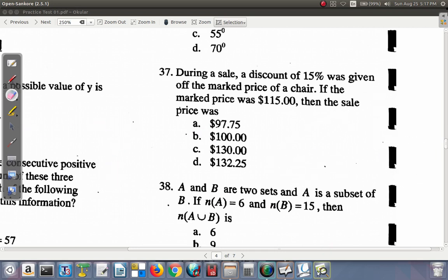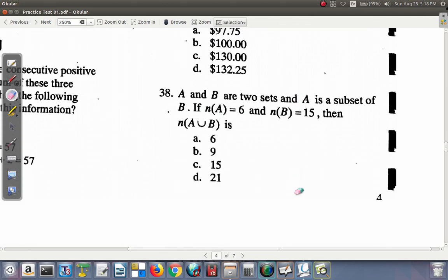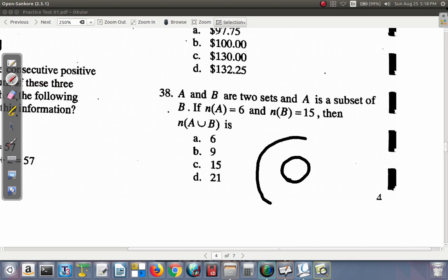Let's look at question 38. Remember, if you're still not too clear on any of these solutions, you should state it in our message board and they will respond. A and B are two sets, and A is a subset of B.